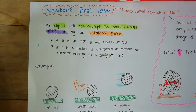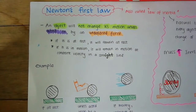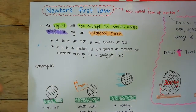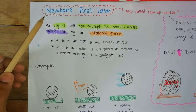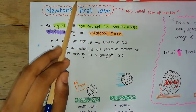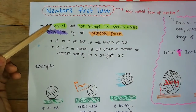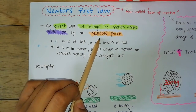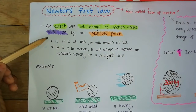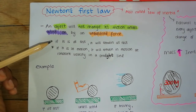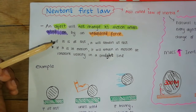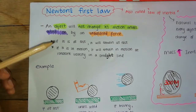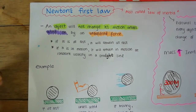That's the basic definition of Newton's first law and how Newton's first law and inertia are related. For an unbalanced force to occur and change an object's motion, the force applied on the object must overcome its inertia.